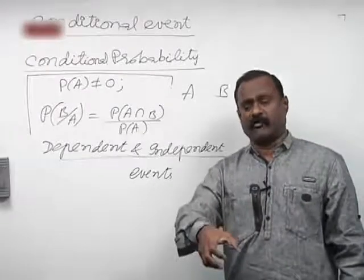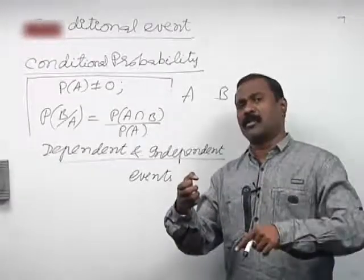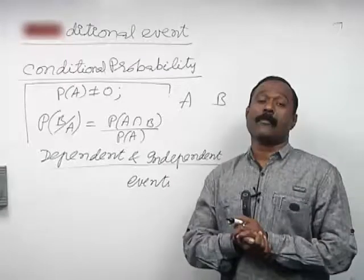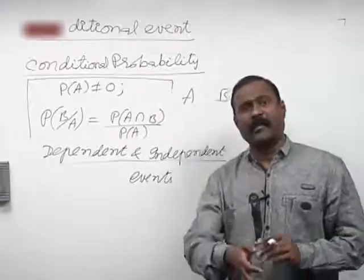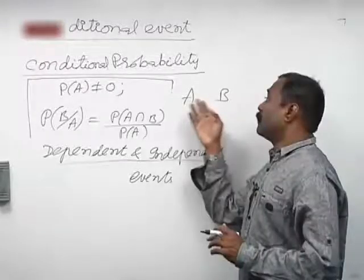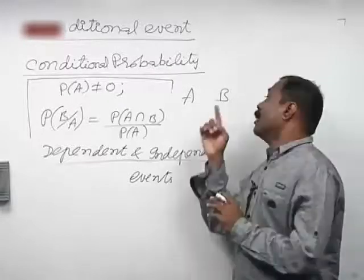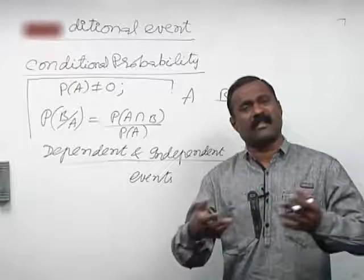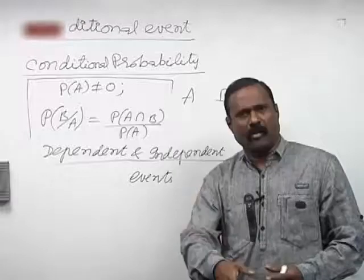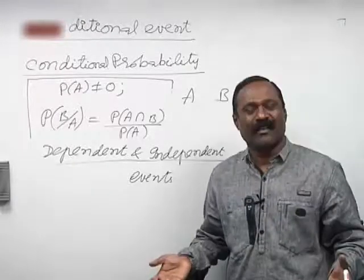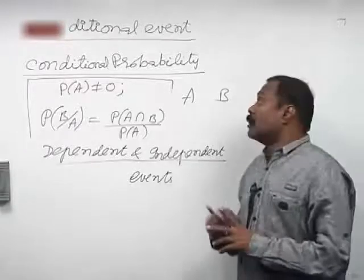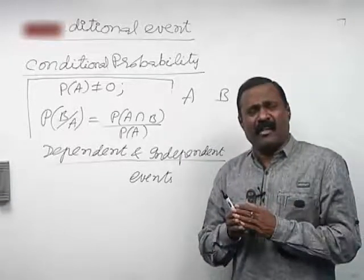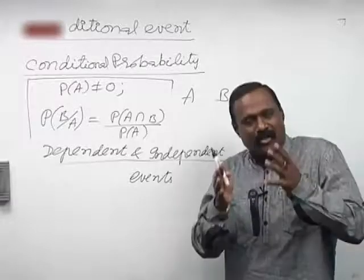In event A, there are 17 balls. I draw one ball, see its color, and replace it. In the second draw, the total number of balls remains 17 as well. So these two events are independent. The occurrence of the first event is in no way influencing the occurrence of the second event because the total number of balls remains the same.